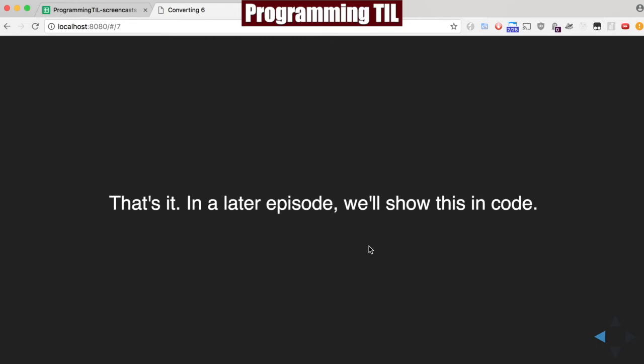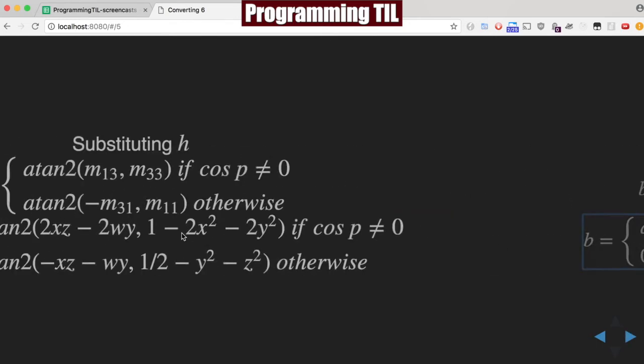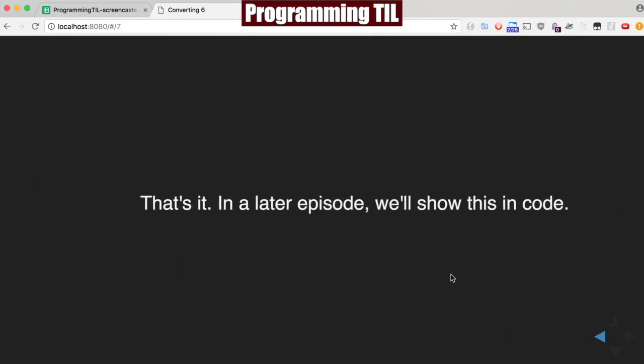So that's really it. It's basically using each of these final formulas and calculating what the pitch, heading, and bank need to be, to be the Euler angles.